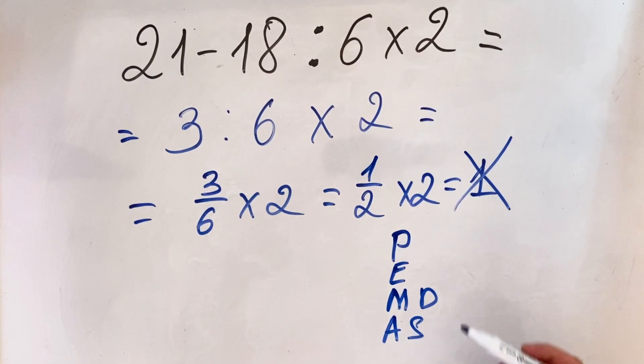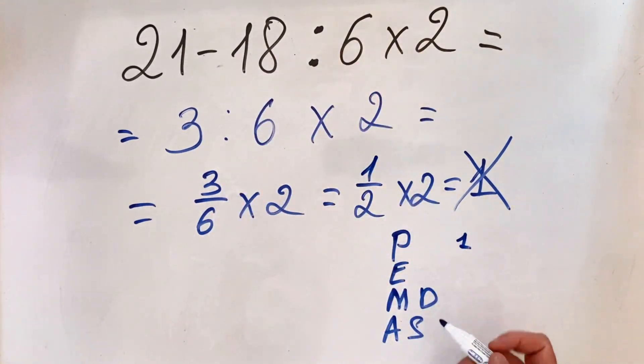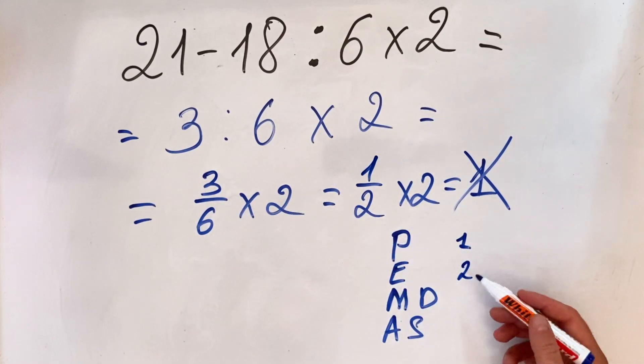Then we have E for exponents. In our case we don't have it, so we skip it. We must do it second if we have it.